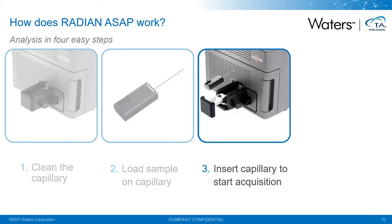Once you have your sample on the capillary, you place the holder and capillary into the loader on the front of the instrument. This will automatically start the acquisition. The instrument will acquire a background spectrum for a short while, and then a written instruction in the software and from the LEDs on the front of the instrument will inform you when to push the sample loader forwards into the instrument. If you have a temperature ramp or step temperature profile set up, this will automatically start when you push the sample in.